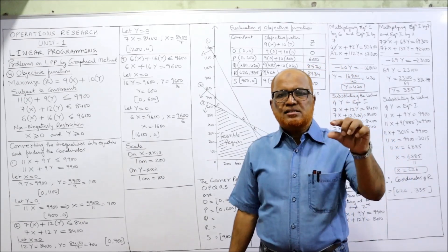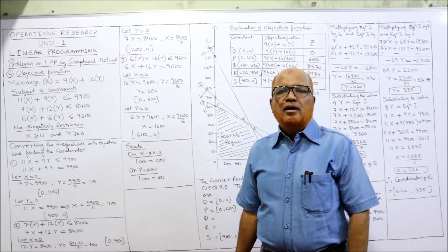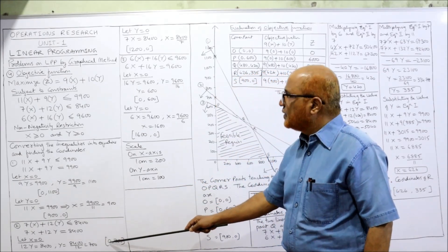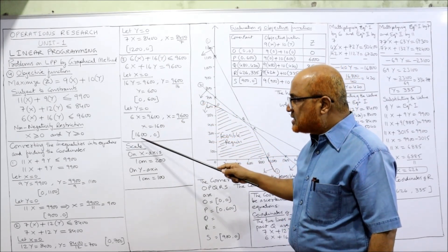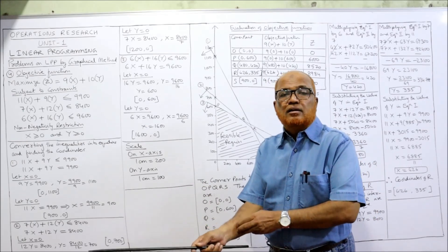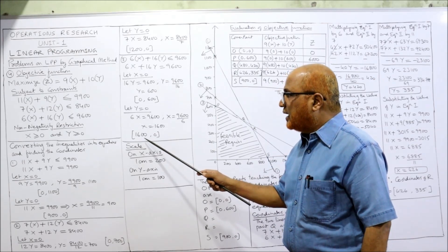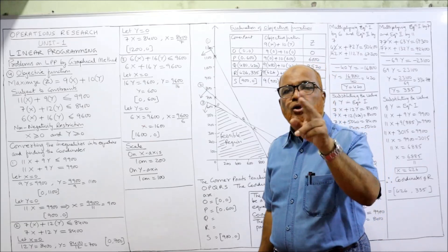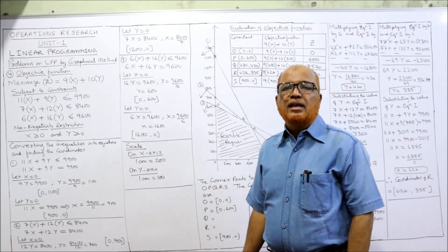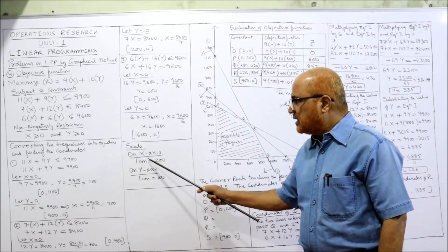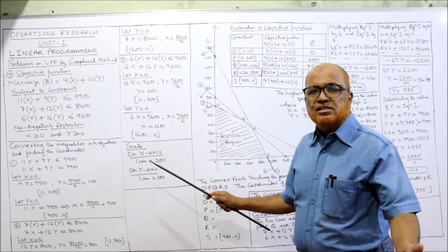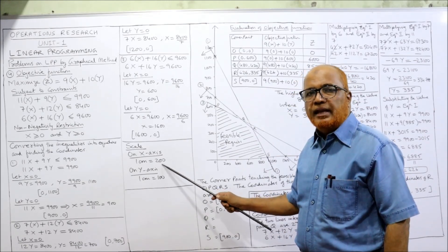Now we have to decide the scale. On the x-axis, the highest value is 1600. We cannot take 1 unit per centimeter since 1600 units exist, so we take 1 cm = 200 units. Then 1600 divided by 200 gives 8 cm, which is convenient. So on the x-axis, 1 cm equals 200 units.